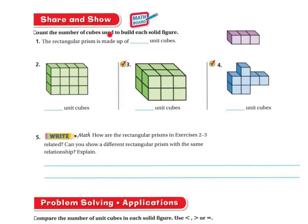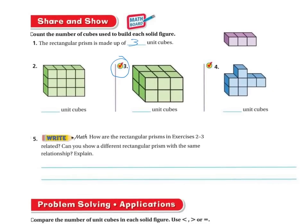Count the number of cubes used to build the solid figure. This rectangular prism has one, two, three cubes — so we write three unit cubes. For a harder one, you have to visualize that there's a row on the bottom and a row behind it, and a row on top and a row behind it, because this is a three-dimensional shape. Counting through: one, two, three, four, five, six, seven, eight, nine, ten, eleven, twelve — so you should have 12 unit cubes.